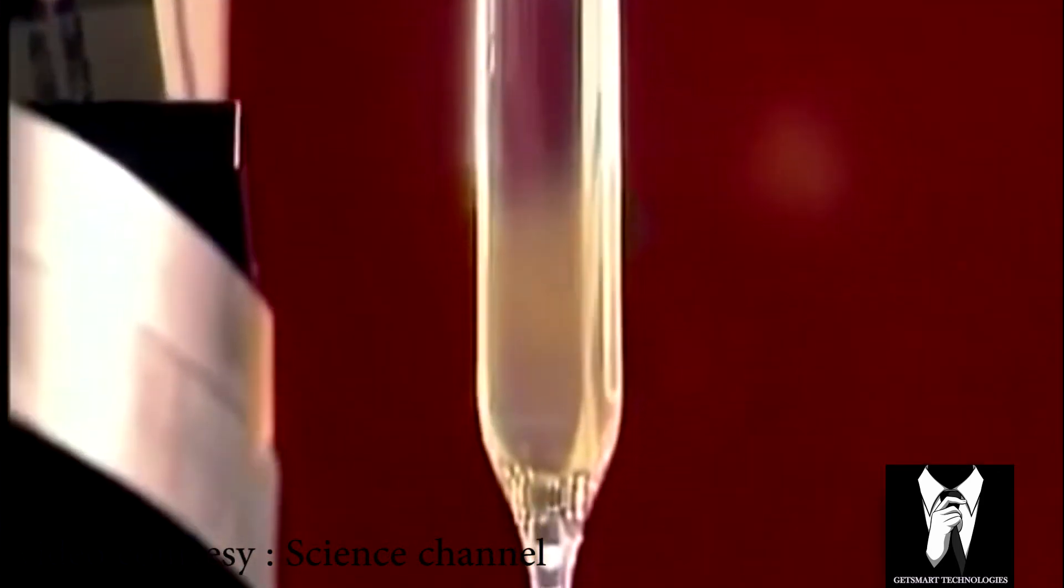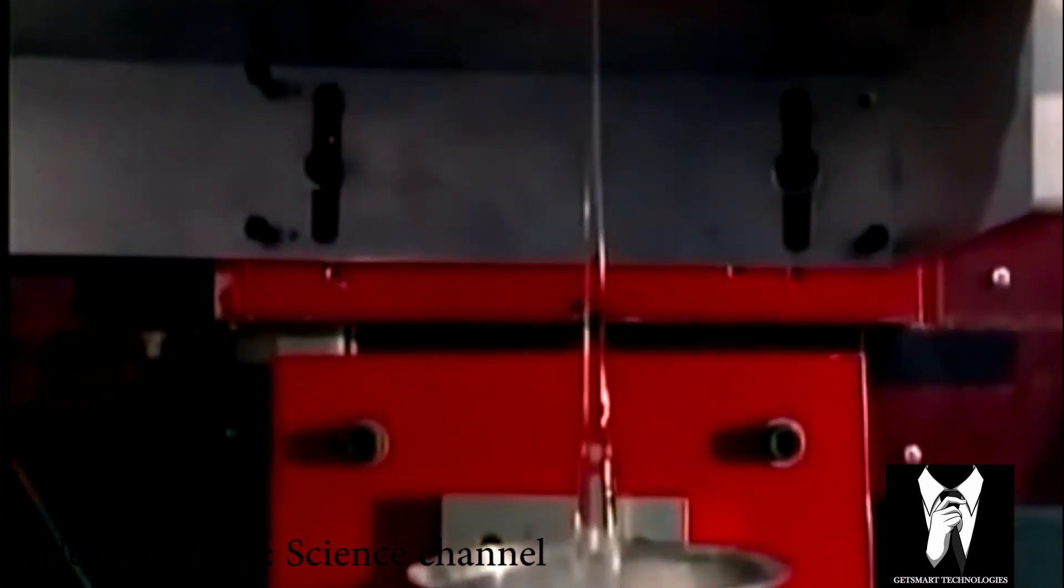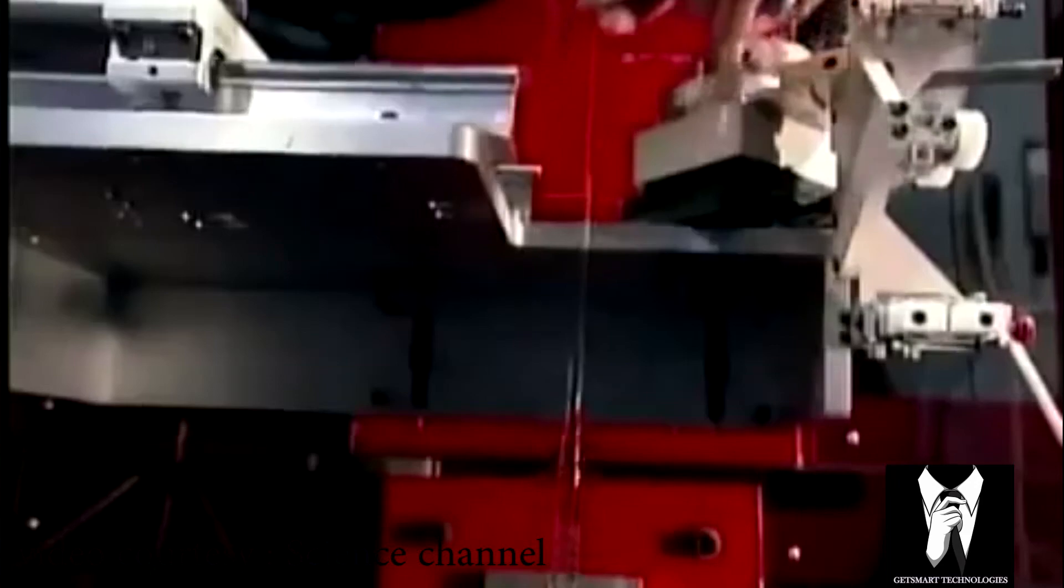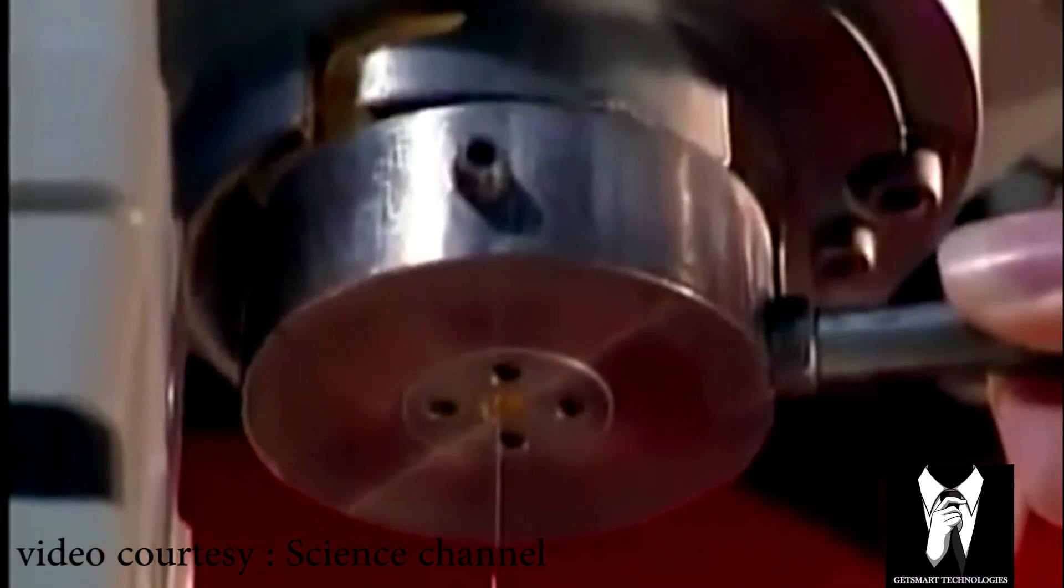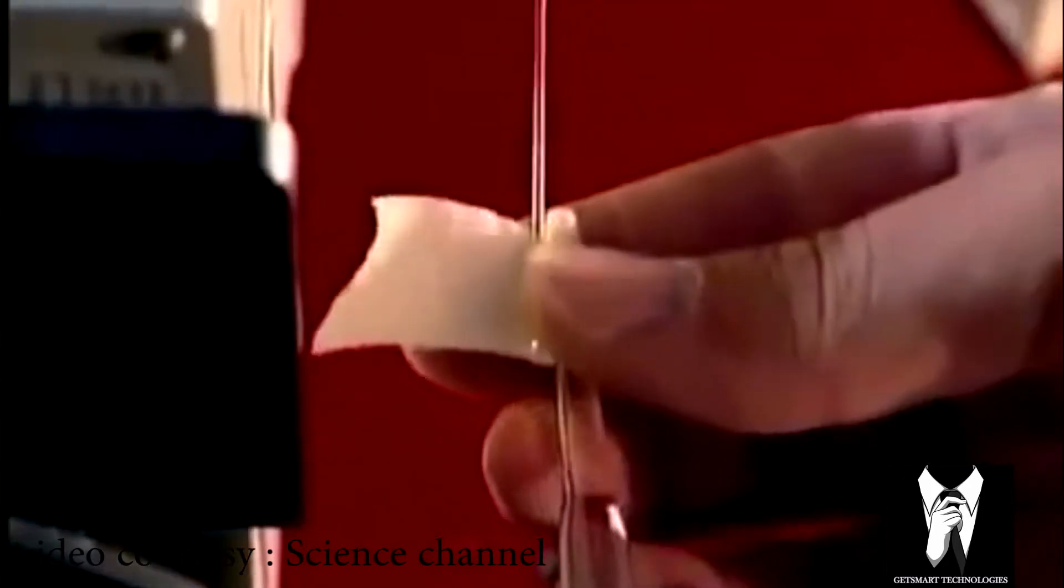The glass softens. Gravity helps pull it down like honey dripping from a spoon. Then using a glob of glass as a weight, they stretch the soft glass and keep stretching it until they form a thin glass fiber.